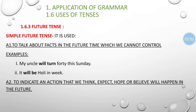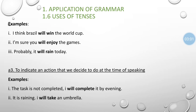Simple future tense is also used to indicate an action that we think, expect, hope, or believe will happen in the future. For example: 'I think Brazil will win the World Cup.' 'I am sure we will enjoy the game.' 'I hope he will enjoy the picnic.' These are possibilities and assumptions about future incidents.